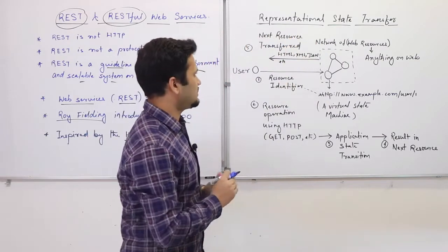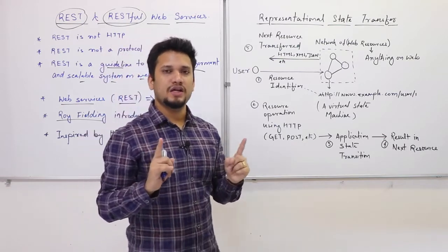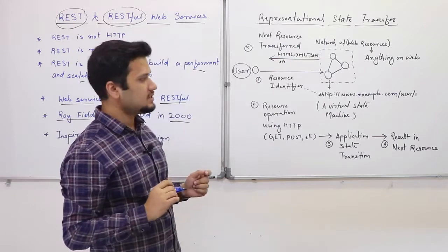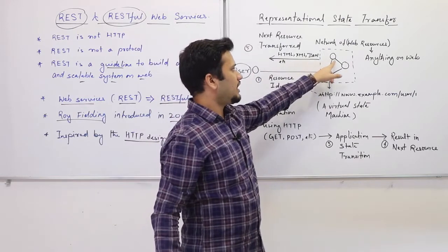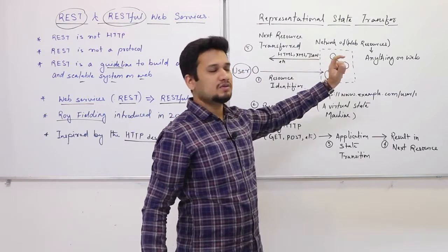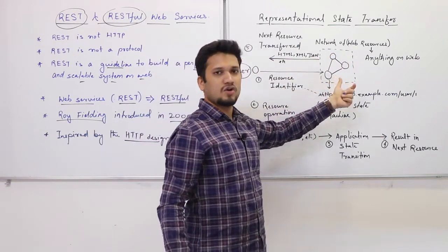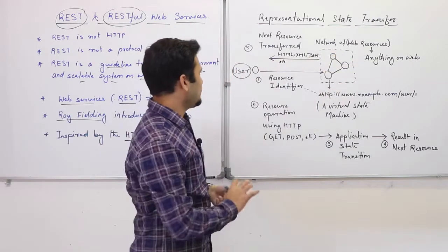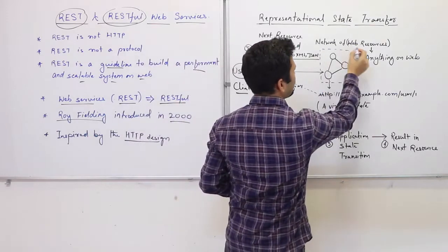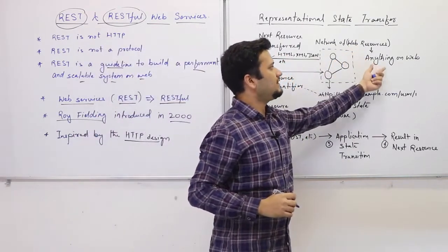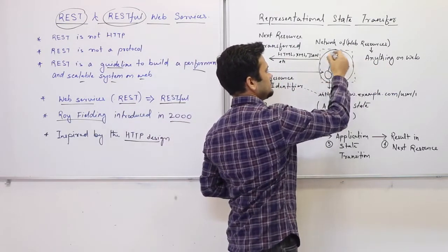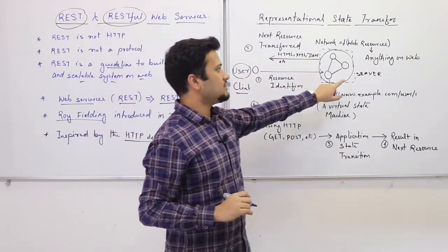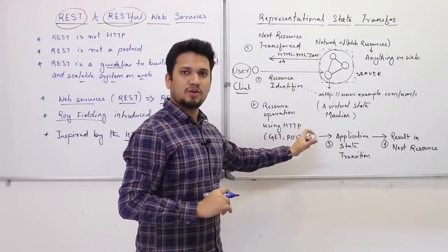To understand Representational State Transfer, you have two major components in your internet infrastructure: the client — the user of your web services — and a network of web resources, which is your server. Web resources means anything you can access on the website. The client can access resources on this server — that is the core principle of REST.